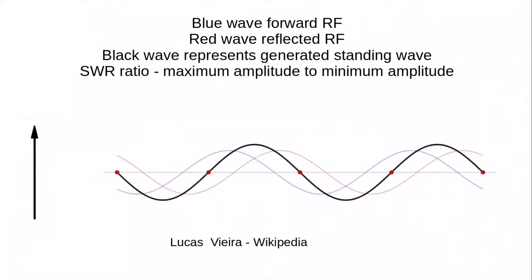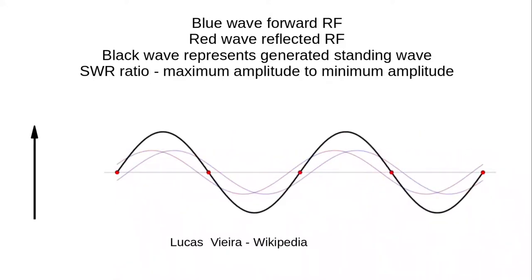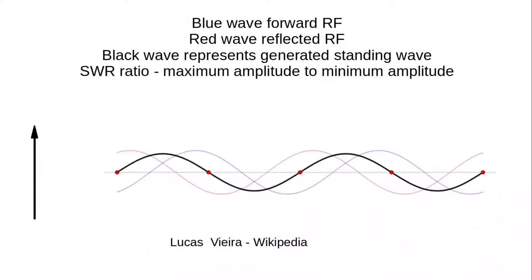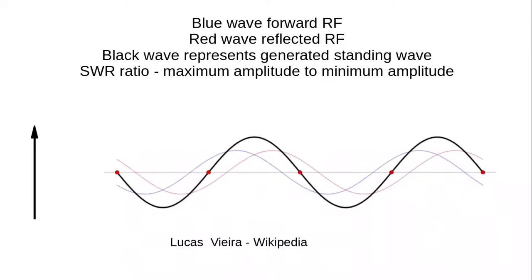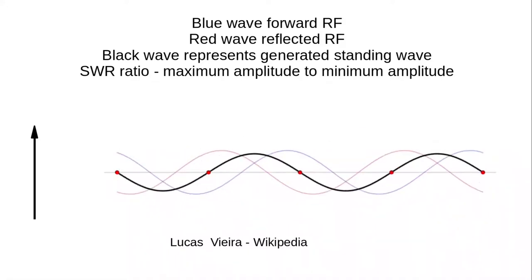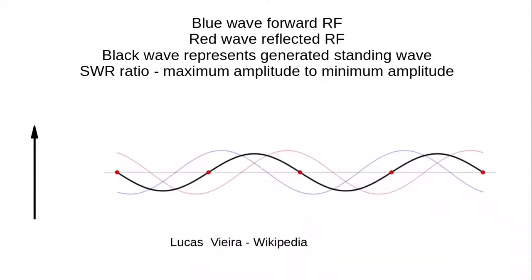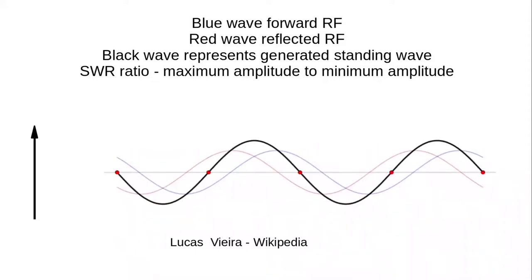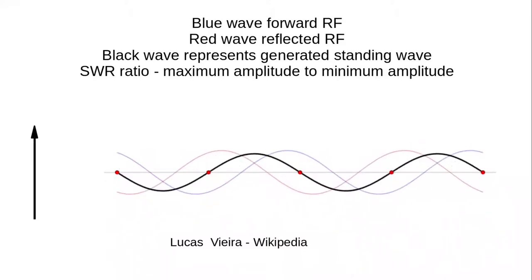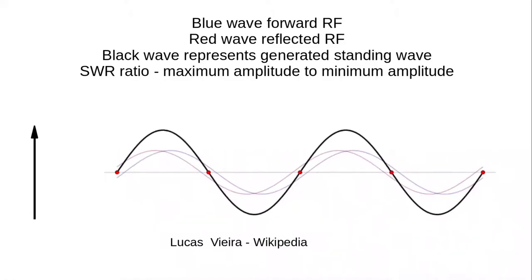This animation by Lucas Vieira depicts standing waves perfectly. There is a forward wave — the blue wave, representing RF power from your transmitter — and a reflected wave. As those waves go back and forth, they create a final wave in black known as the standing wave. The standing wave isn't moving forward or back; it is fixed in one position, and the amplitude of that wave creates the standing wave ratio.